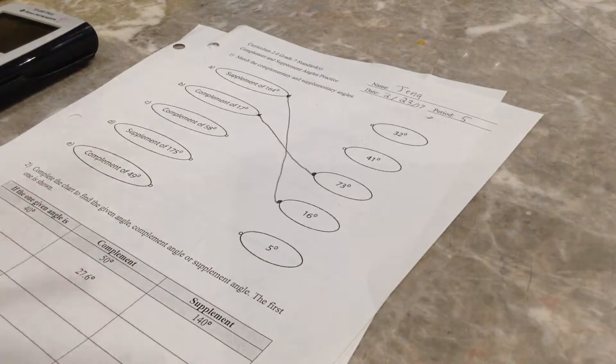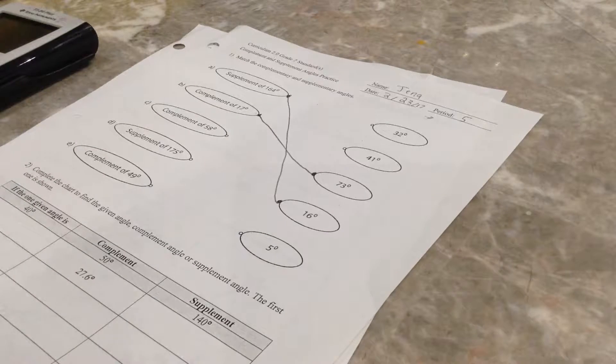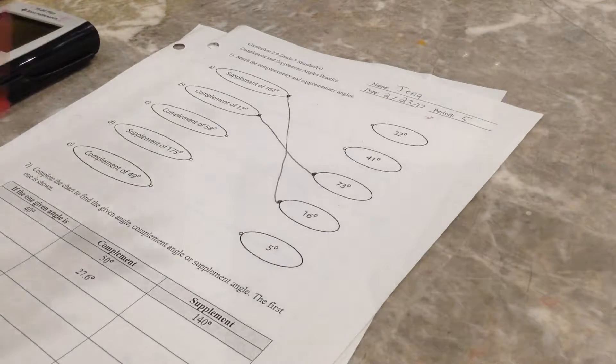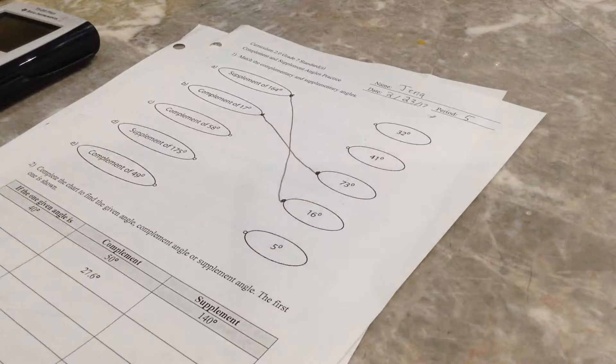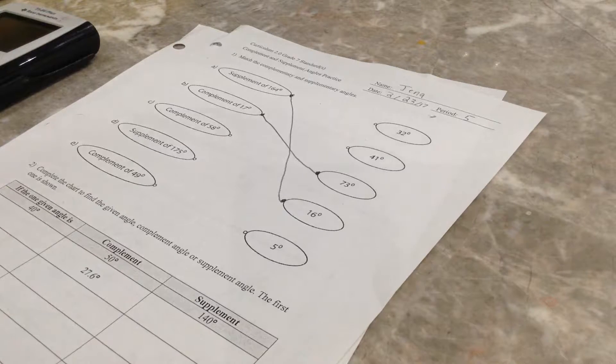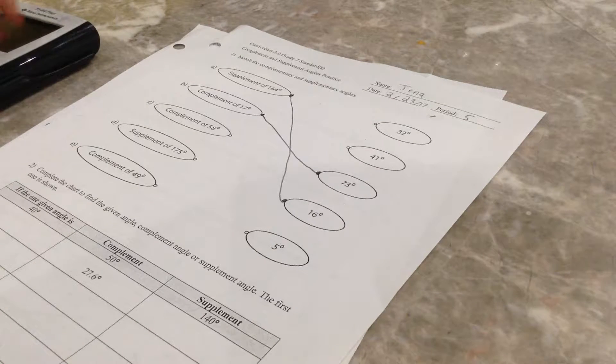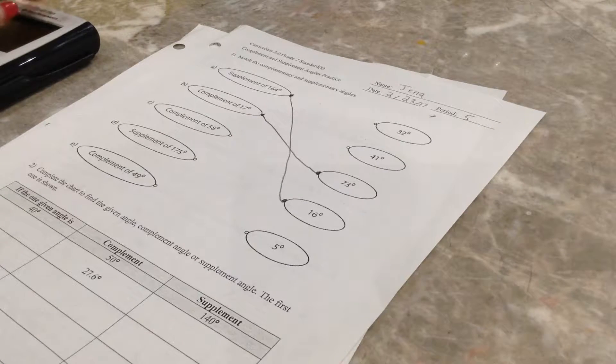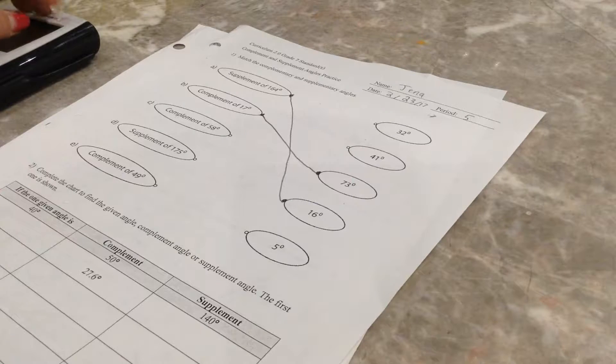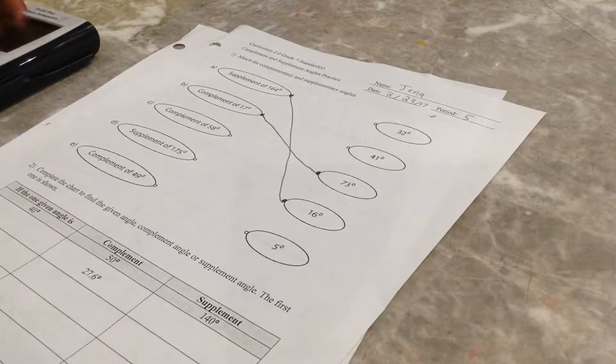This is, like, pure whispering of math ASMR, and it might give you the feels of, like, you know, math, back when you were in school or whatever. Complement of 58 is... Let's see, 232.